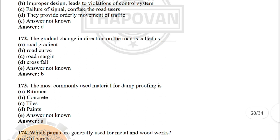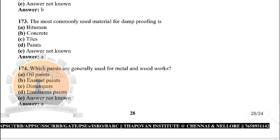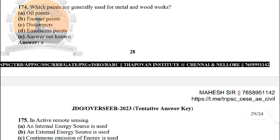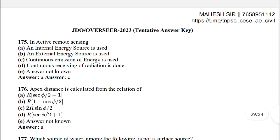Next: the gradual change in the direction of a road is called — the correct answer is option B: road curve. Next: the most commonly used material for damp proofing is — the correct answer is option A: bitumen. Next: which paints are generally used for metal and woodwork? — the correct answer is option A: oil paints.